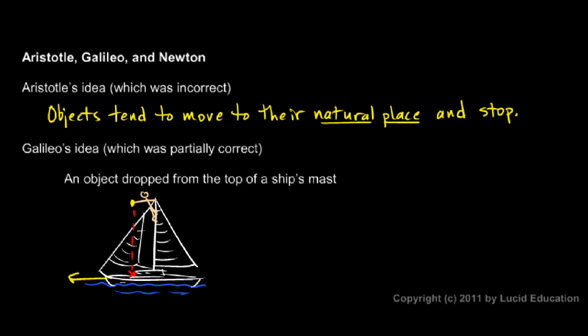Now, Galileo understood that, and he got that right. And the idea that he got right was that an object would continue moving forward. This thing up here at the top of the sailboat mast is moving forward, so it continues to move forward.